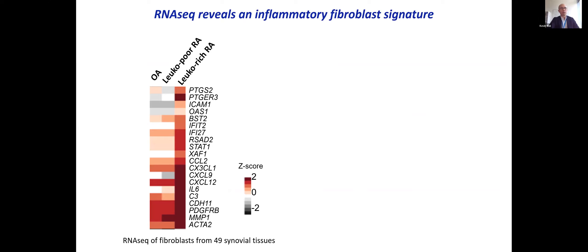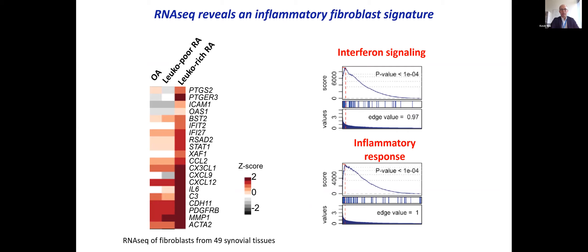When we looked at bulk RNA sequencing, we were encouraged to find that genes highly upregulated in fibroblasts from leuko-rich RA include chemokines and cytokines important in RA pathogenesis — IL-6 is clearly upregulated in the leuko-rich cohort, as well as many chemokines important for recruiting leukocytes into the joint. Applying gene-set enrichment analysis, we can see that these fibroblasts are responding to interferon signaling and turning up their inflammatory response. But since fibroblasts are heterogeneous, we need to identify the specific subset carrying this pathogenic inflammatory signature.